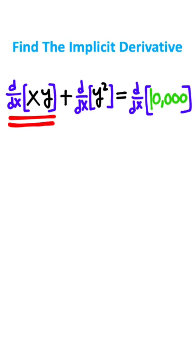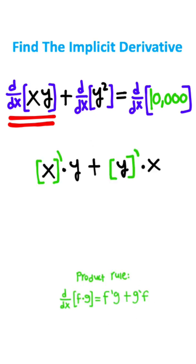We need to use the product rule. I'll copy this rule using x times y. We'll have the derivative of x times y plus the derivative of y times x. Notice this is the same rule.